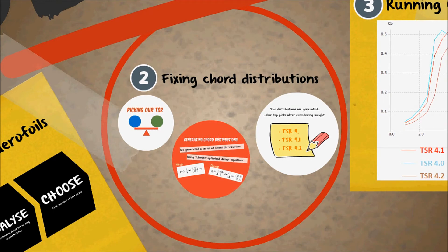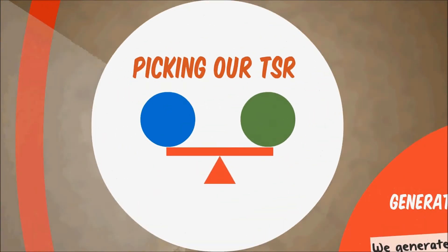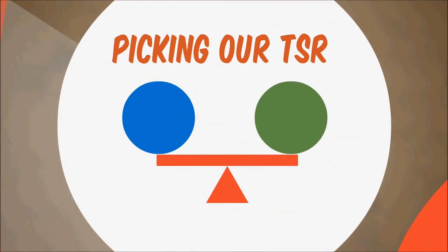With the airfoils shortlisted, we went to fixed chord distributions next. We had to pick our TSR first. Now, we wanted a TSR to balance both power and strength. For small wind turbines, the ideal TSR is between 4 and 5, so we decided to start with 4.